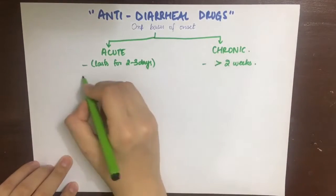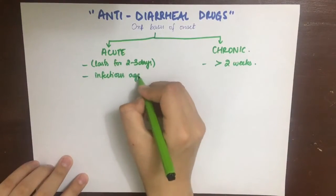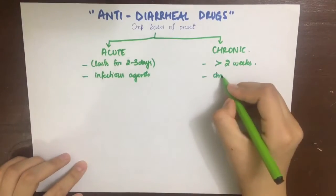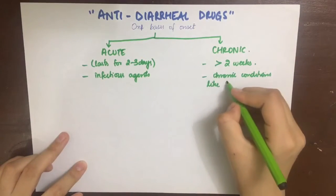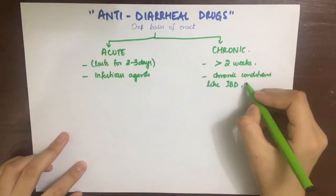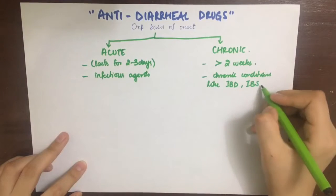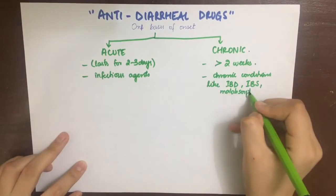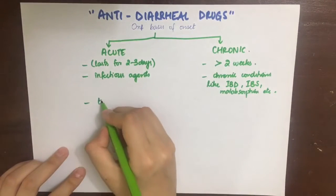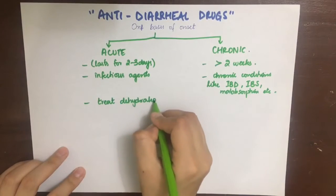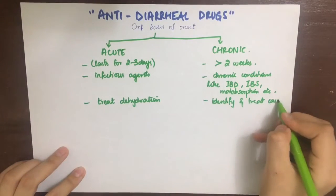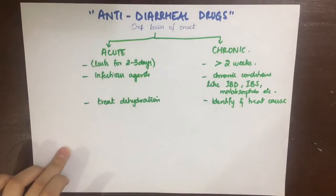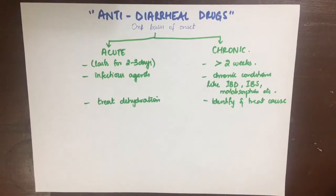The acute form of diarrhea can be caused by infectious agents, and the chronic form is basically due to more serious and chronic conditions such as inflammatory bowel disease, Crohn's disease, irritable bowel syndrome, malabsorption syndrome, etc. The chief approach to treatment of acute diarrhea is to rehydrate the patient, because the chief mortality factor in acute diarrhea is dehydration.